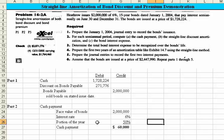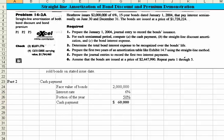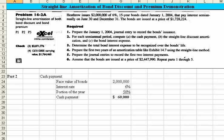Now that we know the cash payment, how do we calculate the discount? To calculate the discount, we're going to take the $2 million face value again.